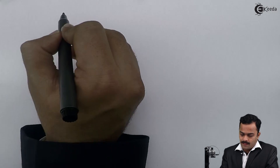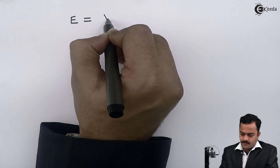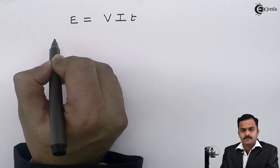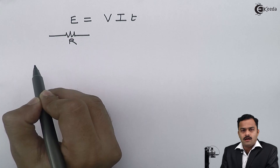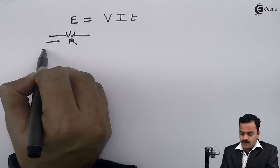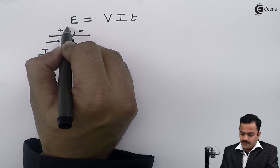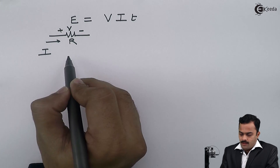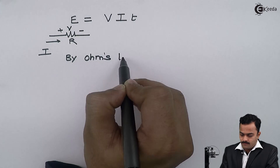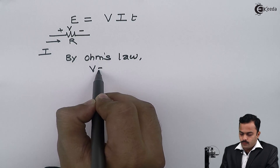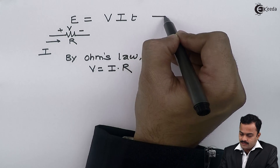So if I know voltage, current, and the amount of time for which electric current is passing through a circuit, I can get electric energy. Let me now write electric energy in terms of different parameters. I have one resistance and the current passing through it is I, because of that I'm getting a voltage across it as V.